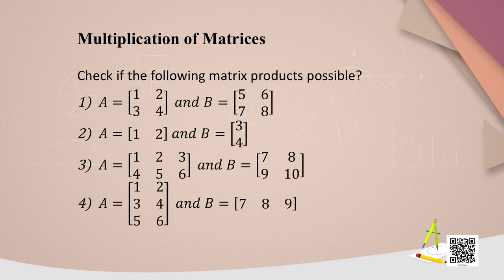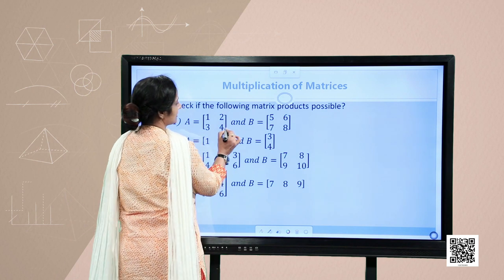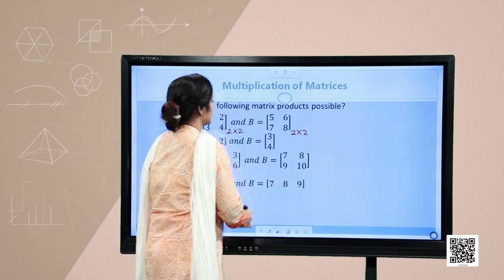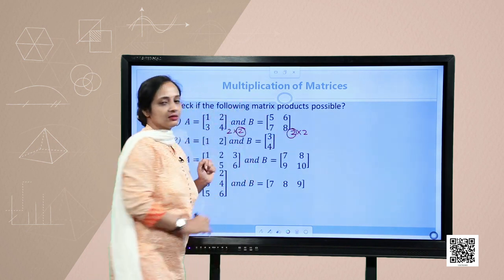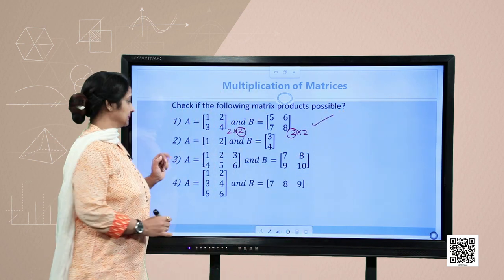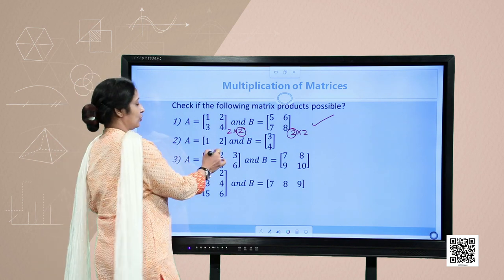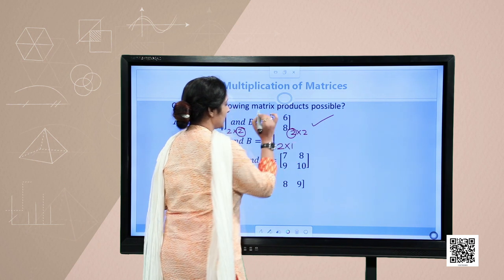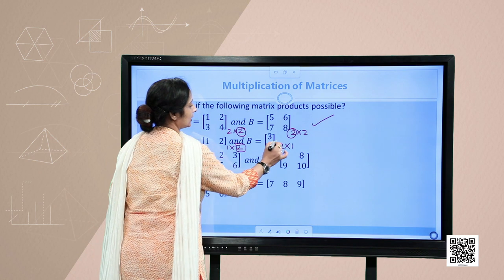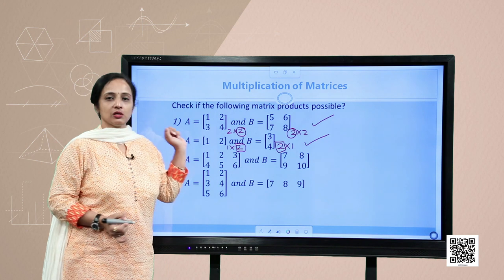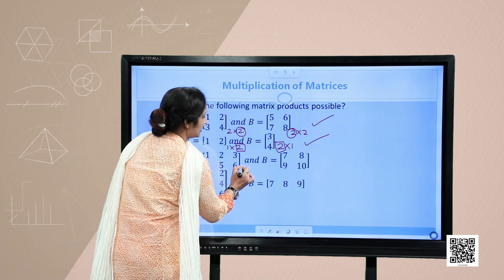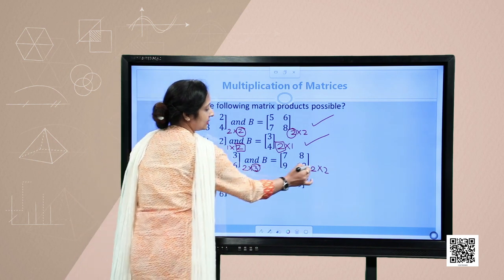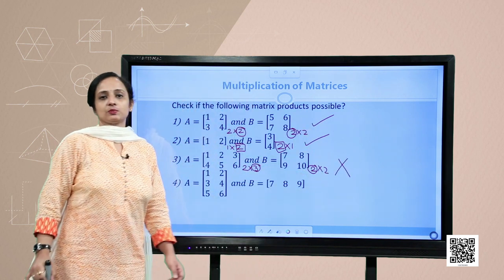Let us check if the following matrix products are possible or not. For the first case, matrix A has order 2 by 2 and matrix B has order 2 by 2. Since the number of columns of A equals the number of rows of B, this product is possible. For the second case, matrix A is of order 1 by 2 and the second matrix is of order 2 by 1. Again, this 2 and this 2 are equal, so this product is also possible. For the third case, orders are 2 by 3 and 2 by 2. Since 3 and 2 are not equal, this matrix product is not possible.